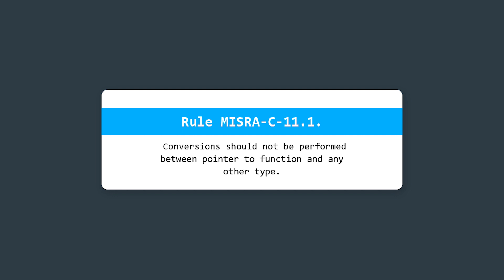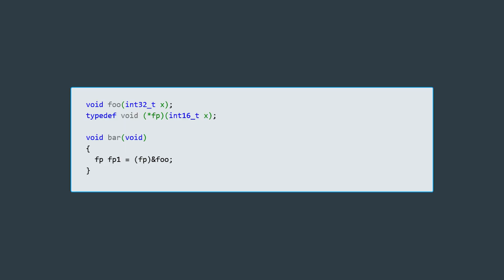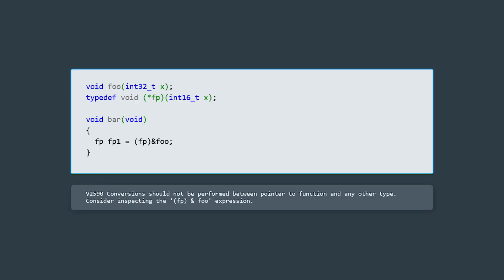Conversions should not be performed between a pointer to a function and any other type. The pointer fp1 to function takes the address of the foo function, whose arguments and return value do not match those of the fp1 pointer. The language standard allows such conversions; however, the MISRA C standard warns that they cause undefined behavior.